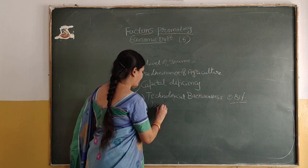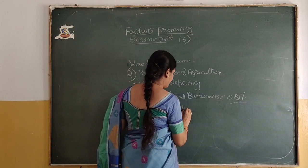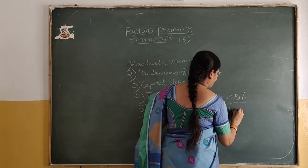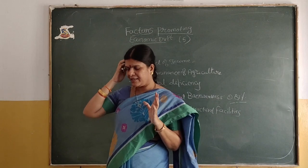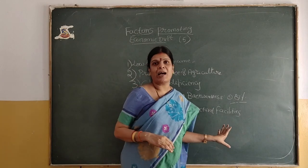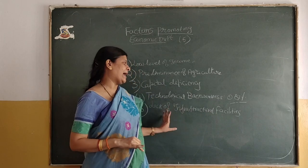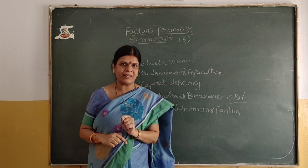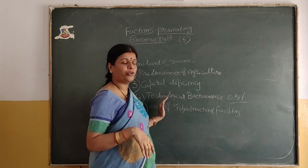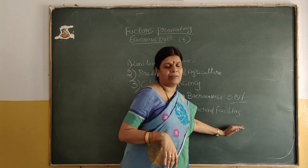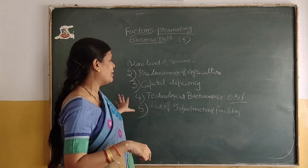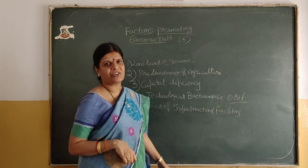The fifth characteristic is lack of infrastructural facilities. Infrastructural facilities include telecommunications, transport, and everything. In India we don't have proper transport facilities and lack of communication. This leads to attracting less foreign investment, and most industries could not develop in India because of lack of infrastructural facilities — not only industries but agriculture also suffers because of low infrastructural facilities.